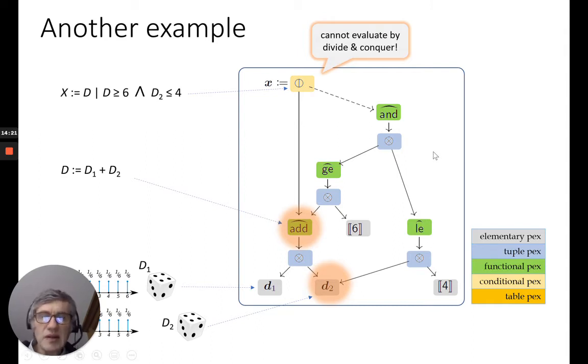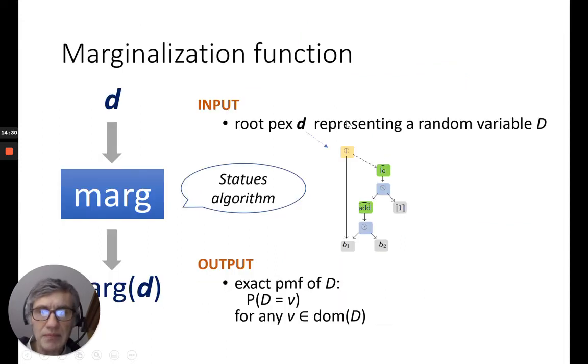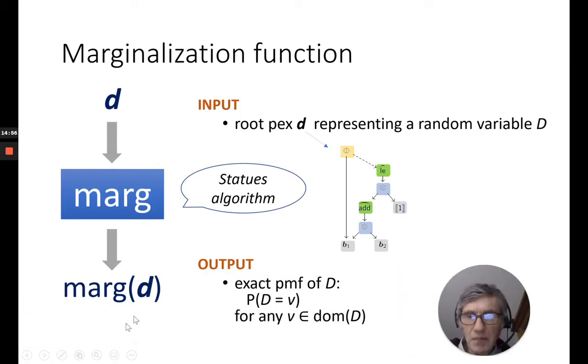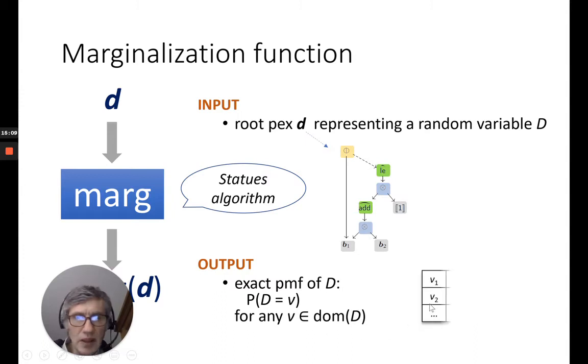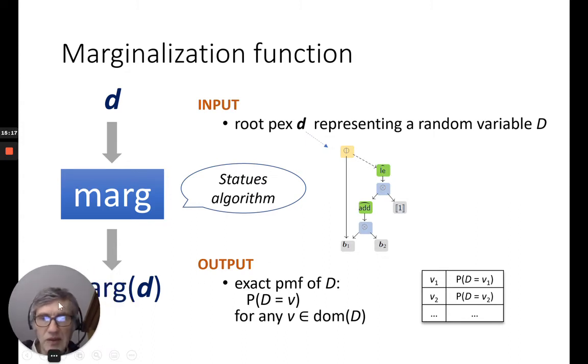So, we need something else in general. Maybe divide and conquer can work on three models, but generally it won't work. So, we define here the top-level function, which is marge for marginalization. So, the input is the root PEX D, as I've shown in the previous slide, which represents some random variable D. The marginalization then is expected to produce a new probability distribution, which is exact, which is the exact PMF probability mass function of D. And this is presented as a small table giving all the value with respective probabilities. So, this is the top-level, the entry-point function of this status algorithm.